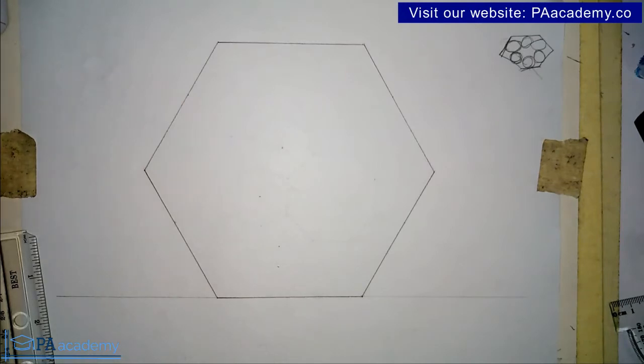Now, the step is the same thing irrespective of the polygon that you are dealing with. It's either six, seven, eight, nine, ten, whatever. The step is still the same thing. So just follow along and I believe at the end of this video, you'll be able to draw equal circles inside any polygon.